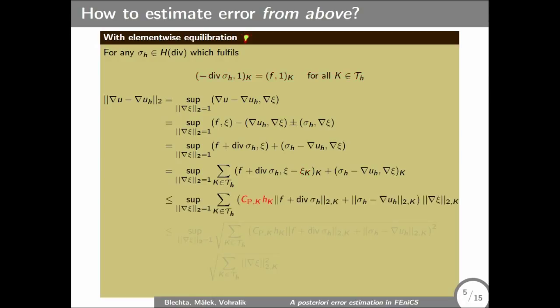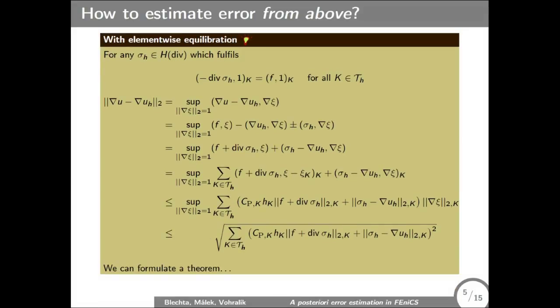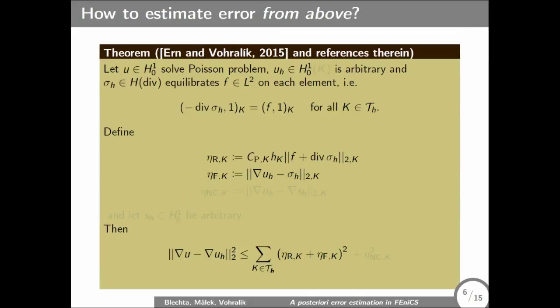So now just Hölder inequality and Poincaré inequality, because this is zero mean on each cell. This is Poincaré constant on the cell. So here's a gradient Xi over cell. Just now Minkowski inequality. And that's the quantity which is one. So we really have an estimate if we have such a sigma_h which equilibrates to the F. We can estimate the error in terms of this residual estimator and flux estimator.